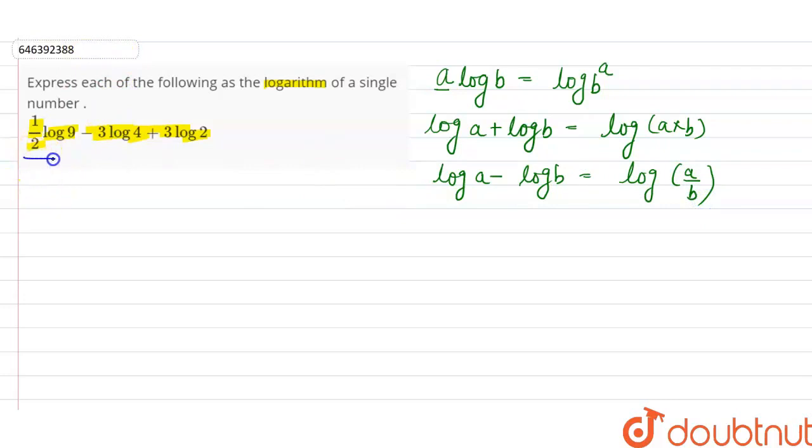First of all, a log b. So we write log 9 to the power 1 by 2. Okay? Minus a log b, which is log 4 cube. Okay? Similarly, we write log 2 to the power 3. Okay?